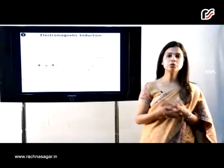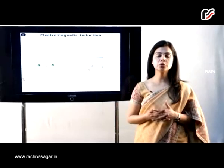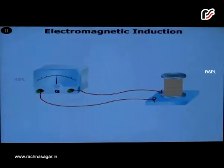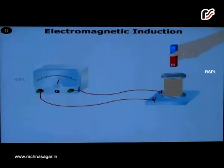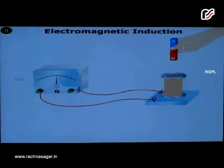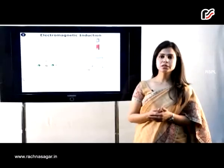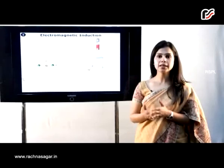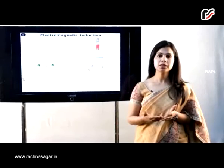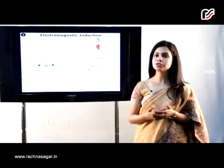Let us understand electromagnetic induction with the help of this activity. There is a coil of wire with many turns attached to a galvanometer, which is a device used to detect the presence of current in a circuit. When we bring a magnet to this coil of wire, we observe a deflection in the galvanometer. As we move it away, the deflection is in the opposite direction. When the magnet is stationary, there is zero deflection. This tells us that due to the motion of the magnet, a current is induced in the coil of wire.